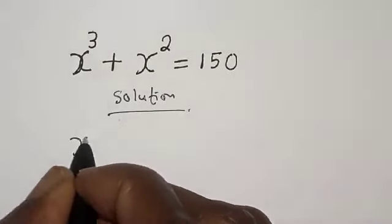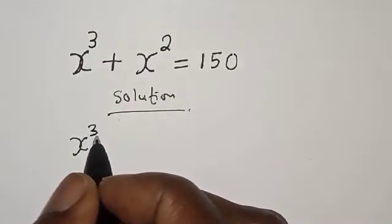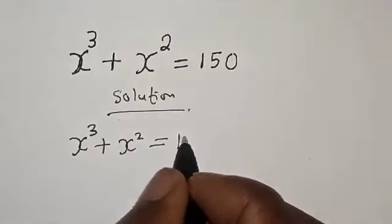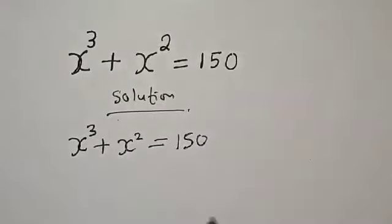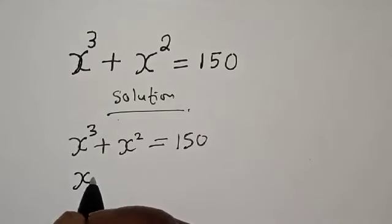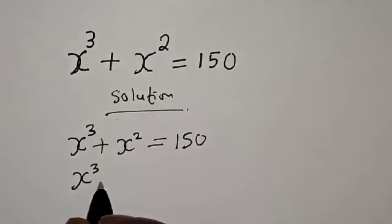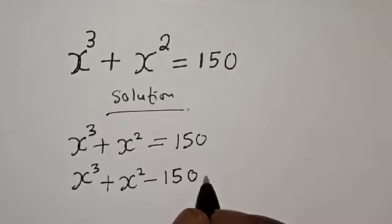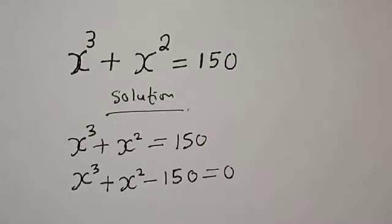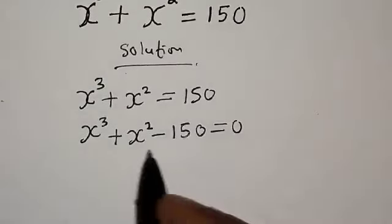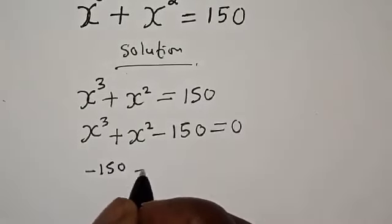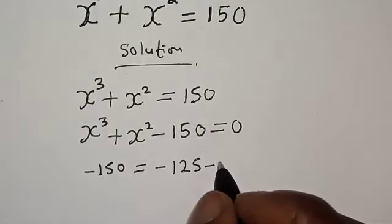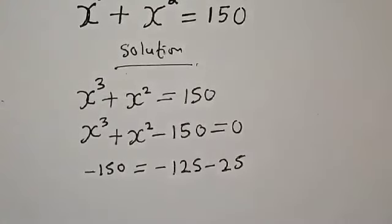Solution: we have the given equation s³ plus s² is equal to 150. Then we have s raised to power 3 plus s squared minus 150 is equal to 0. Then we split: -150 is simply -125 minus 25.